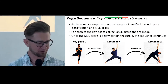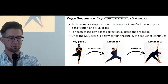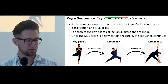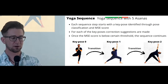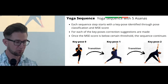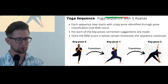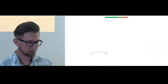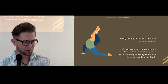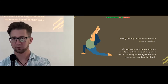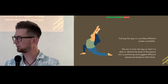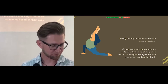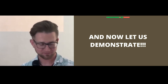The yoga sequence logic works as follows: each sequence step starts with a key pose identified through pose classification and a mean square error score. Correction suggestions are made for each key pose, and once the score falls below a certain threshold the sequence continues — repeating until the entire sequence is completed. This is a proof of principle; in general, the system can be trained on many more asanas, and we aim to develop it further into a mobile app.